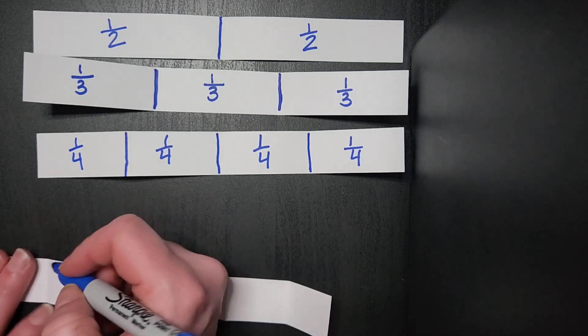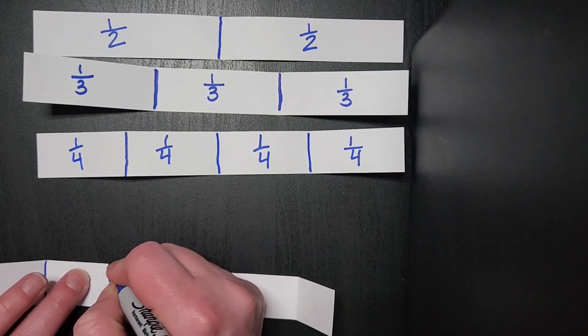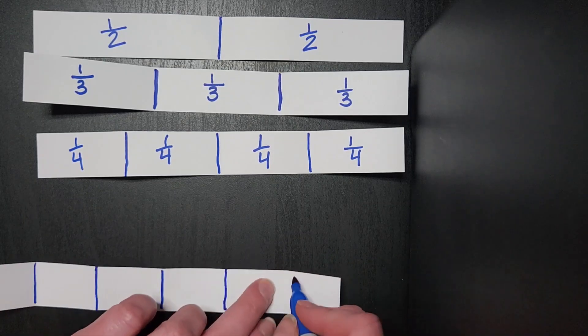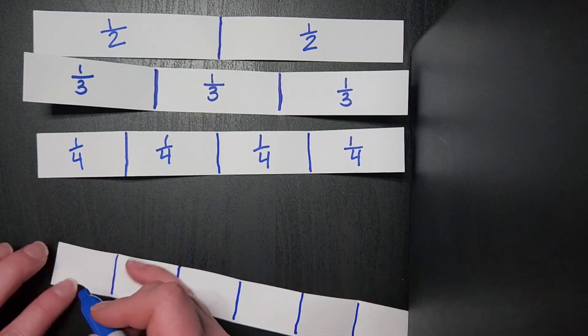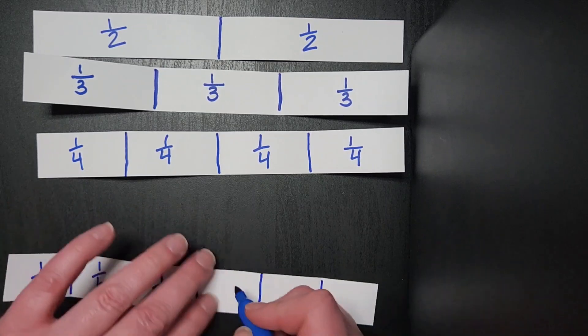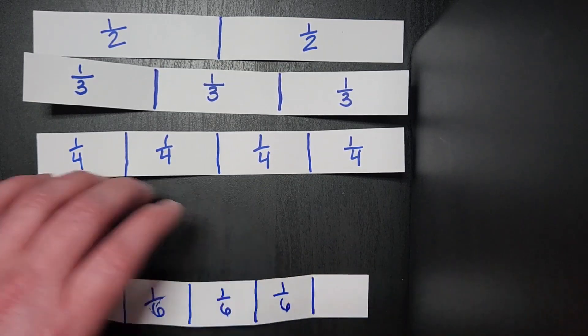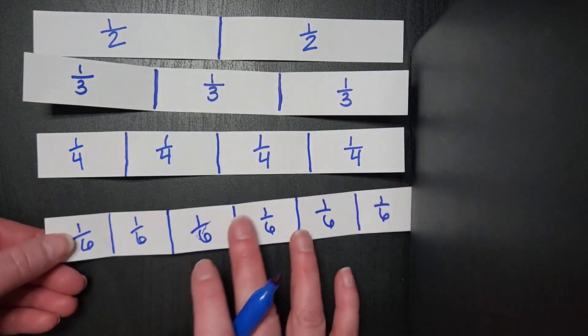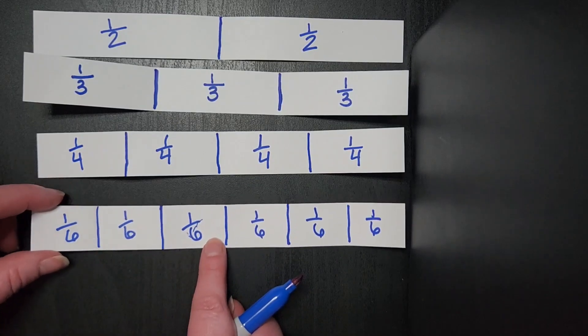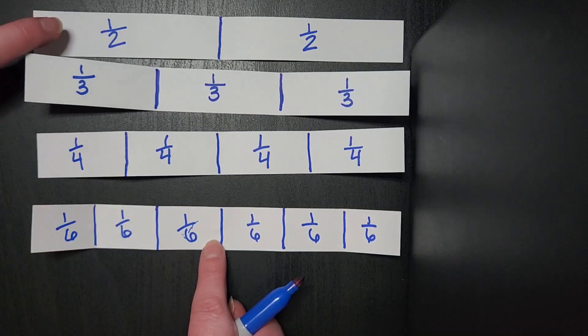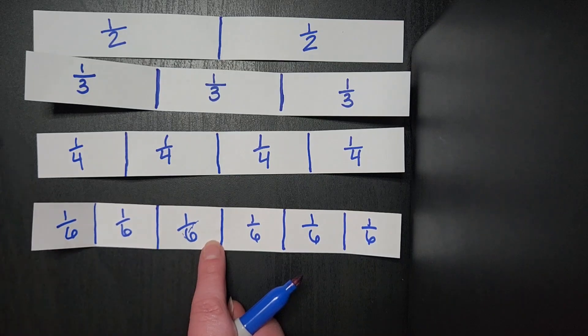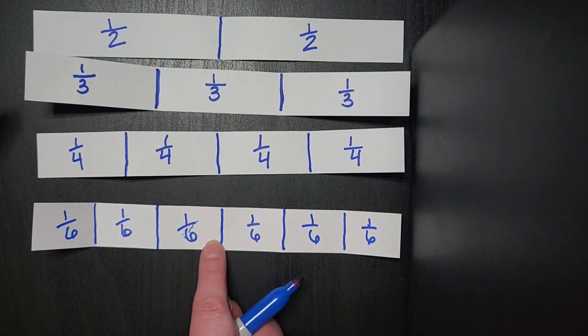So once we have this all labeled, we again revisit the vocabulary of unit fraction. We talk about comparing, and we can compare the size of one sixth to the size of one fourth, one third, or one half. I also ask kids to find an equivalent. So I say, how many sixths are equivalent to a half? And most times I'll get somebody that is able to recognize the third. And then I change it up a bit and ask how many sixths are equivalent to a third.